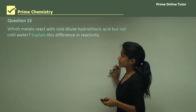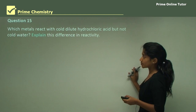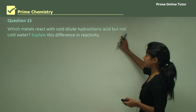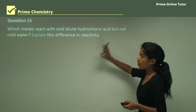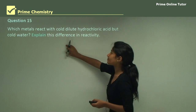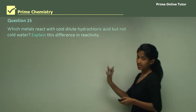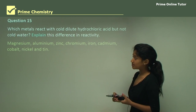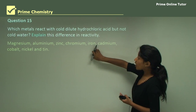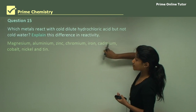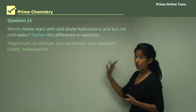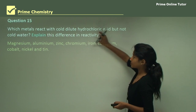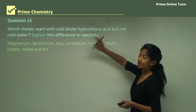Question 15: Which metals react with cold dilute hydrochloric acid but not cold water? Magnesium, aluminium, zinc, chromium, iron, cadmium, cobalt, nickel, and tin — all these react with cold dilute hydrochloric acid but not water.